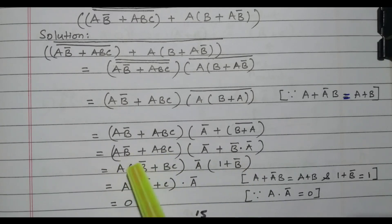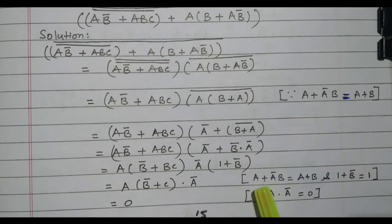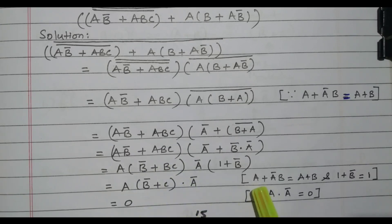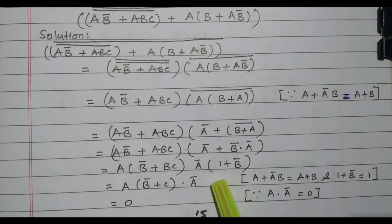Taking A outside from the first two terms gives A times B-bar plus BC. Taking A-bar outside from the remaining terms gives A-bar times 1 plus B-bar. The term B-bar plus BC can be simplified to B-bar plus C based on the theorem A plus A-bar B equals A plus B, since B-bar is the single term and C is the remaining variable. Also, 1 plus B-bar is always 1, since any variable added with 1 gives 1.